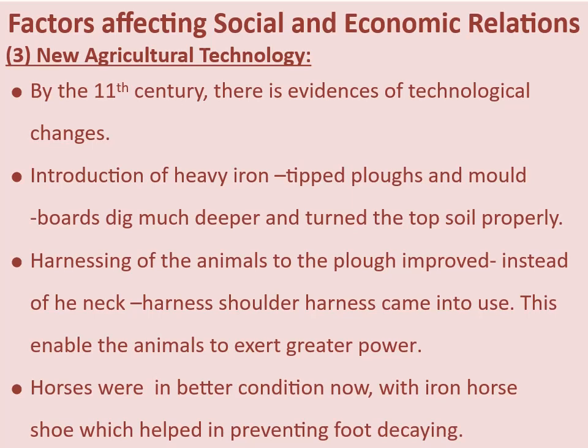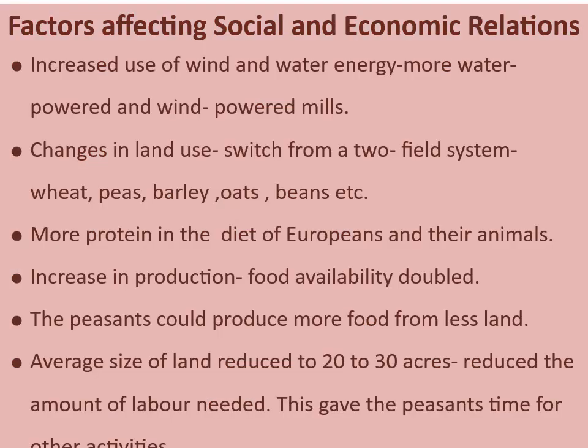The third factor was new agricultural technology. By the 11th century there is evidence of technological change: heavy iron-tipped plows and moldboards dug much deeper and turned the topsoil properly. Instead of the neck harness, a shoulder harness came into use, enabling animals to exert greater power. Horses were in better condition with iron horseshoes, which helped prevent hoof decay. Increased use of wind and water mills, and a switch from a two-field system to crops like wheat, peas, barley, oats, and beans added more protein to the diet. Food availability doubled, and peasants could produce more food from less land — average land size reduced to 20 to 30 acres — giving peasants time for other activities.